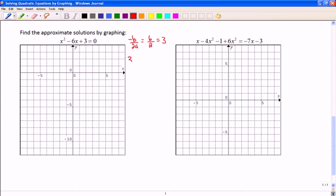So 3, and then the value for y will be 3 squared minus 6 times 3 plus 3. So I'm going to have 9 minus 18 plus 3. So negative 9 plus 3 is negative 6. So the vertex is at 3, negative 6.